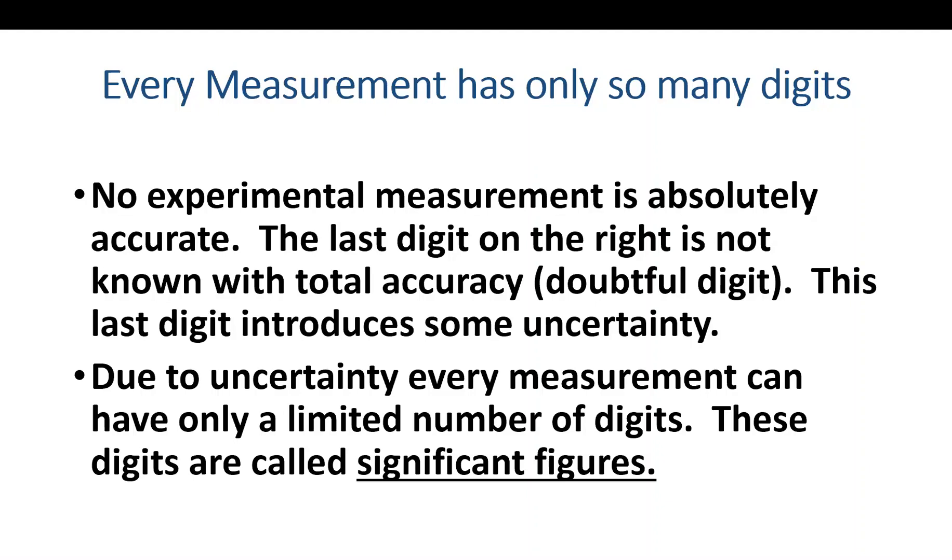I just want to emphasize that no measurement is absolutely accurate. The reason why it's not absolutely accurate is there's always some doubt, there's always some uncertainty. That last digit on the right is not known with total accuracy, and that's why we refer to it as a doubtful digit.